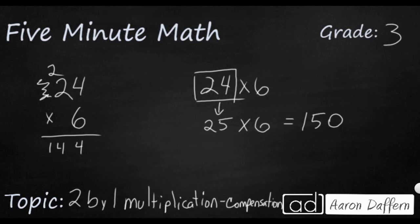But now we need to think about what do we do? How do we change this? So we actually added one. So we have one extra group of six in this 150. So we're going to have to take that extra group of six away. And that's how we get to our 144.